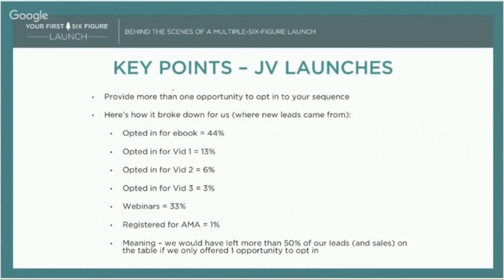I was really turned on to the idea of creating more landing pages based on a webinar replay done by Nick Stevenson. I was a part of his launch for Your First 10K Readers, a training course that shows people how to get their first 10,000 readers for their Kindle books. He went into detail about the numbers — which landing pages converted the most and the percentage of opt-ins. The first two landing pages got most of the opt-ins, as you would expect. But unexpectedly, all the other landing pages he created ended up getting half of his opt-ins.